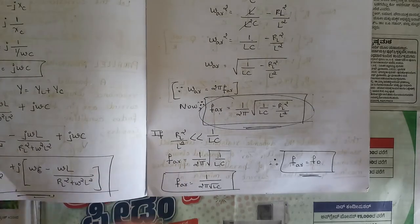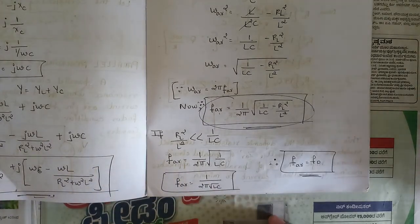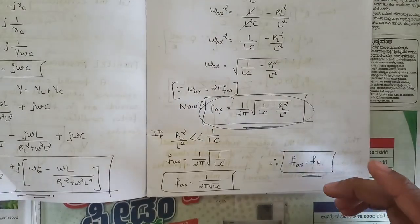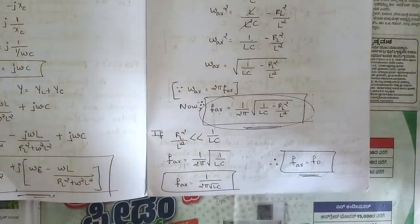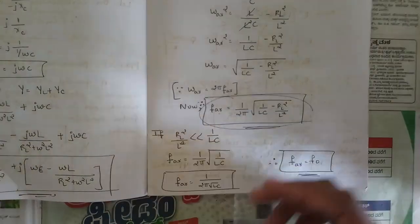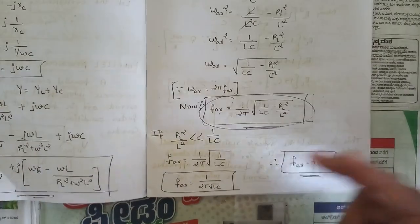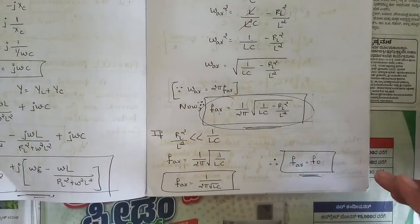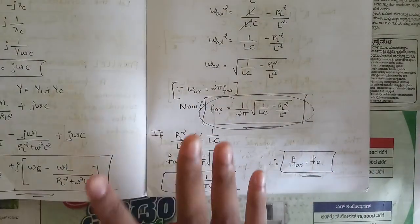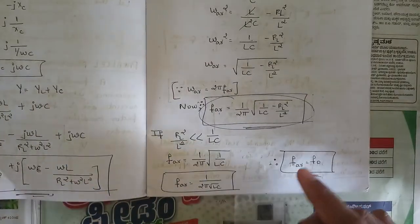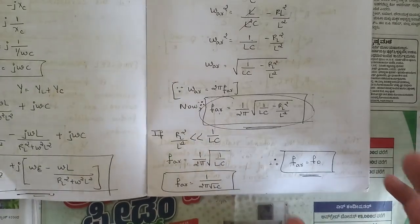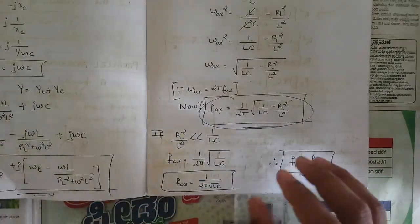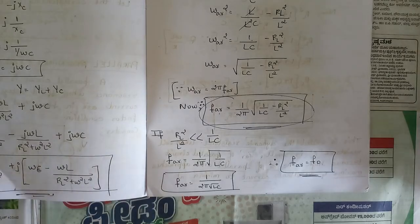To summarize this module: one derivation on series resonance, one on parallel resonance, and questions on the interrelationship between Z, Y, H, and T parameters — including representing H parameters in terms of Z, Y, and T parameters — are all important and will be asked from this module.